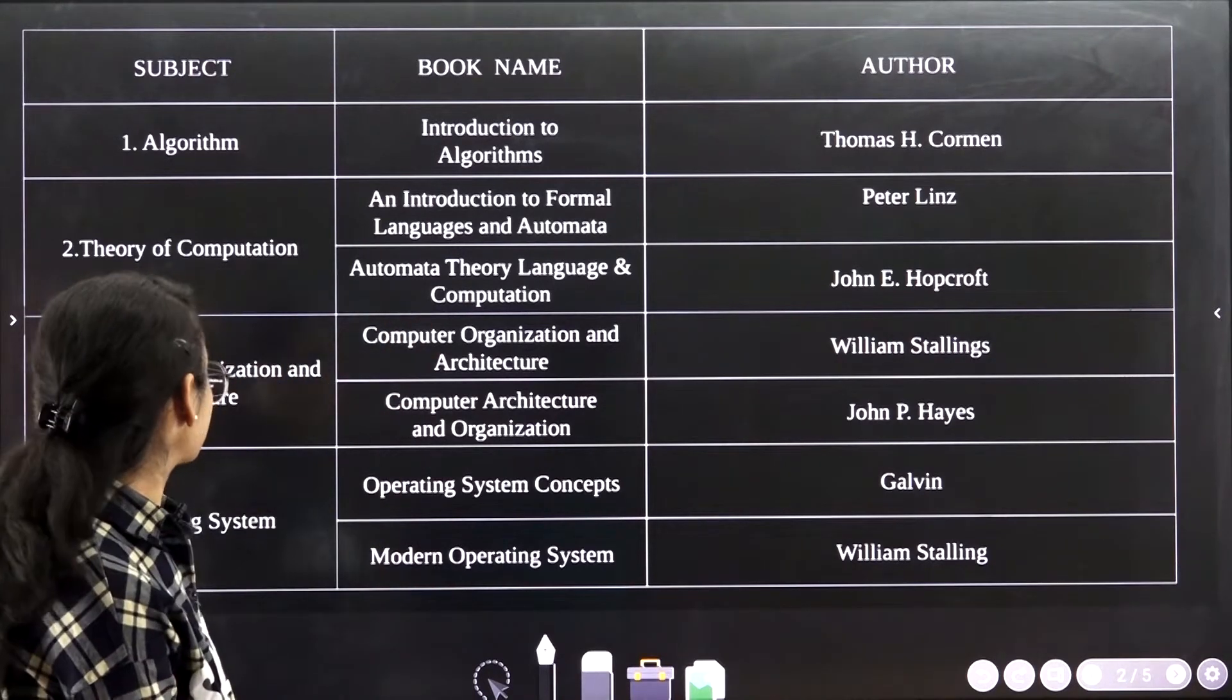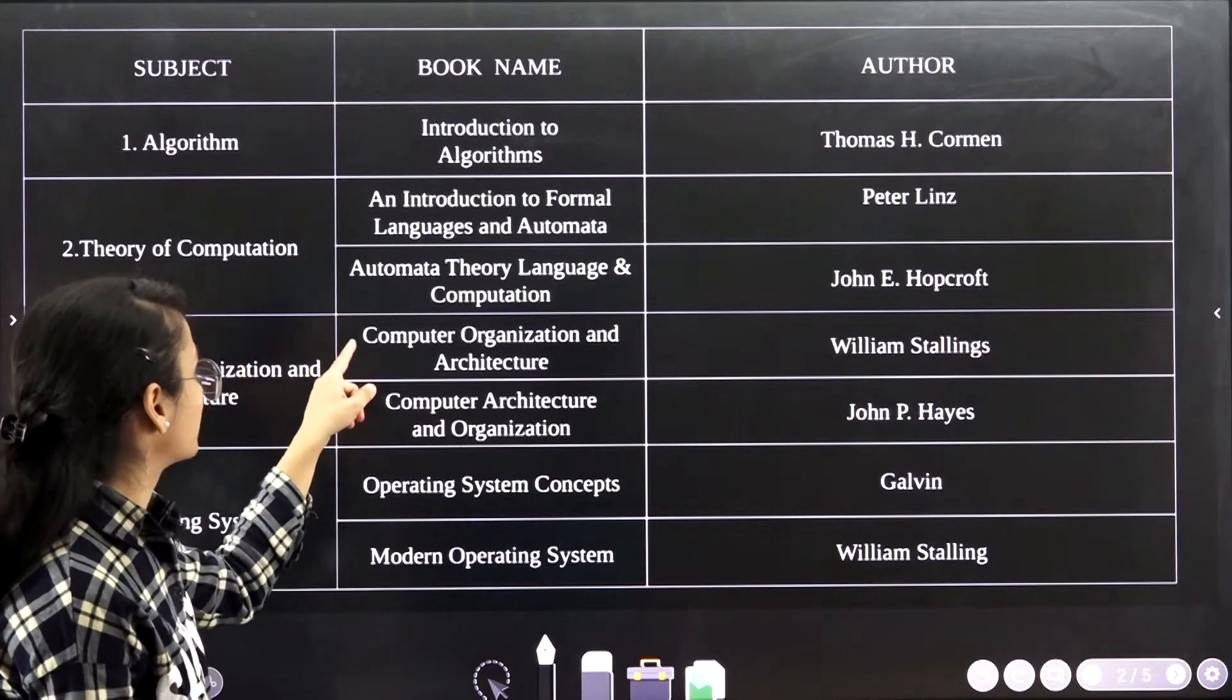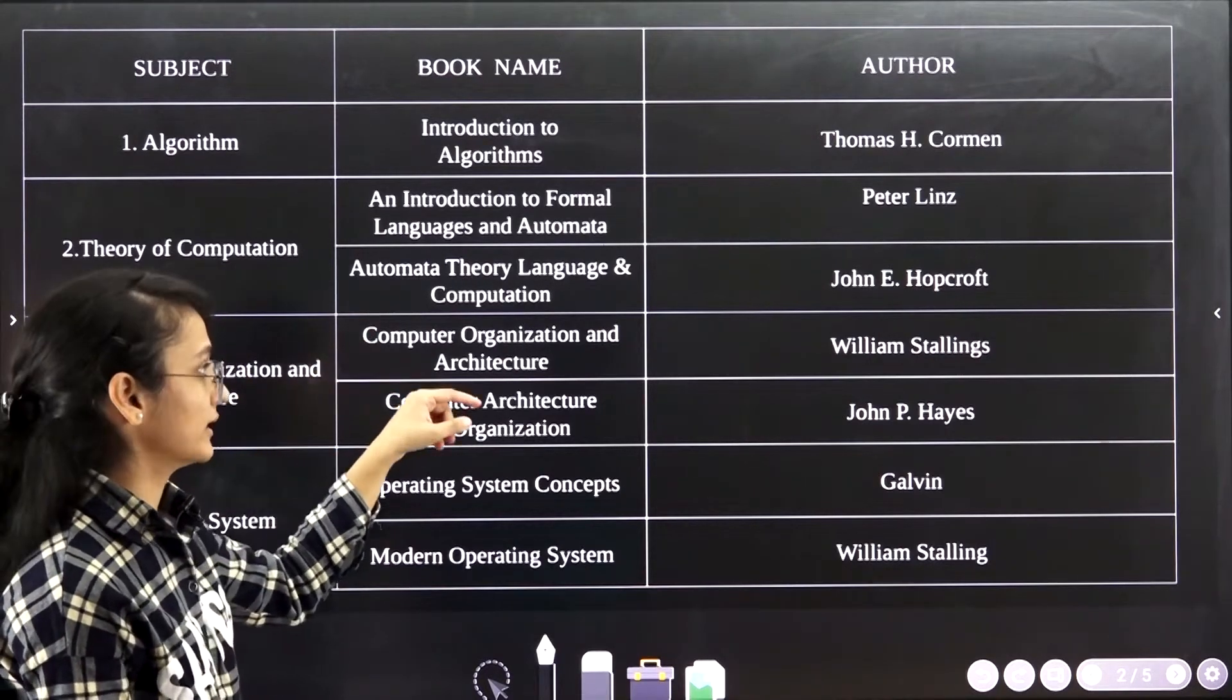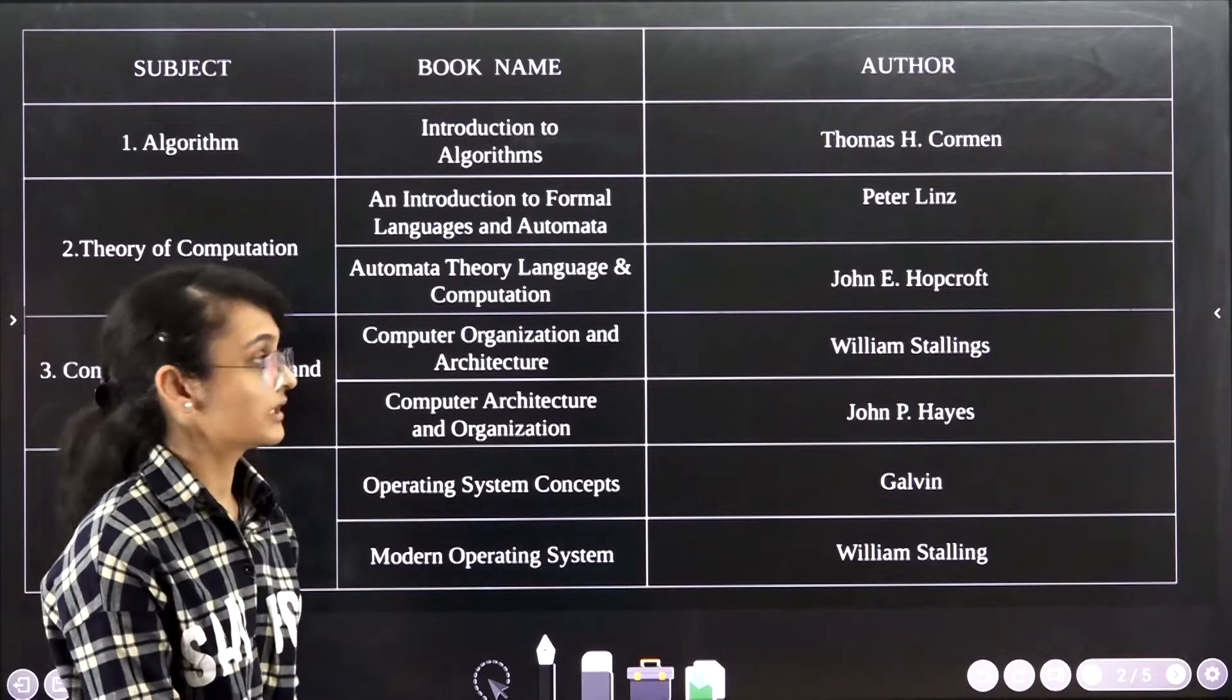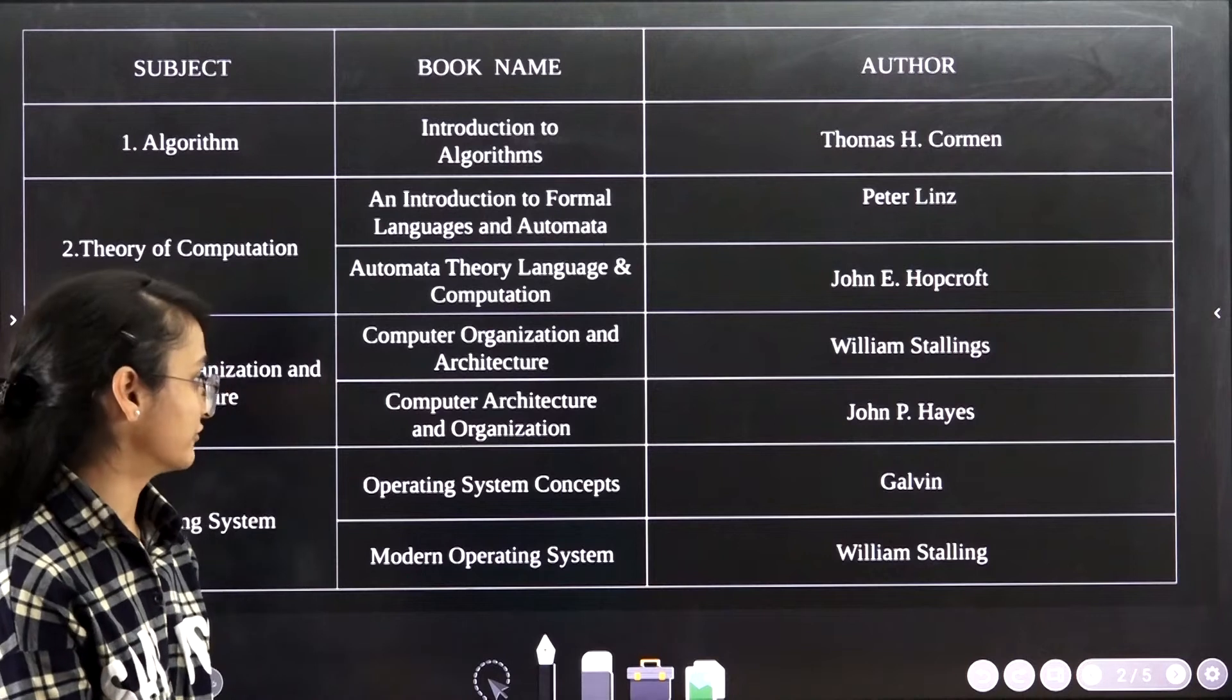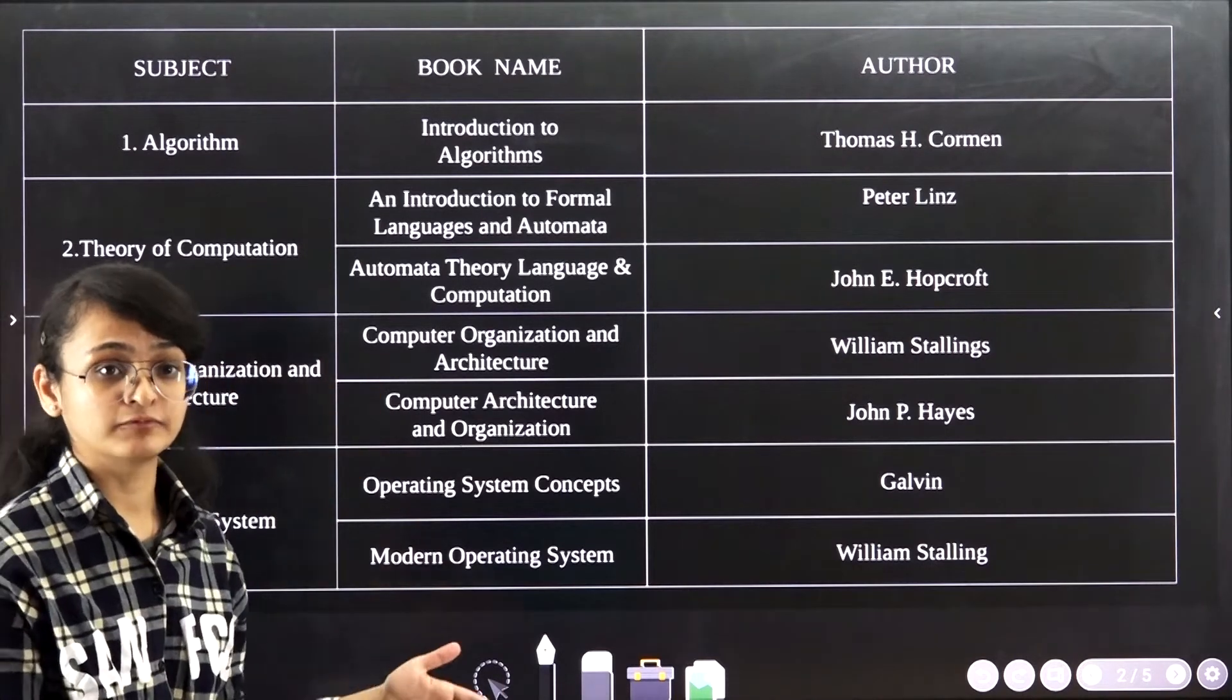The next book is for Theory of Computation. The book I follow is An Introduction to Formal Languages and Automata by Peter Linz. Another book is Automata Theory, Languages and Computation by John E. Hopcroft. The book by Peter Linz is really very helpful to prepare for Theory of Computation very easily.